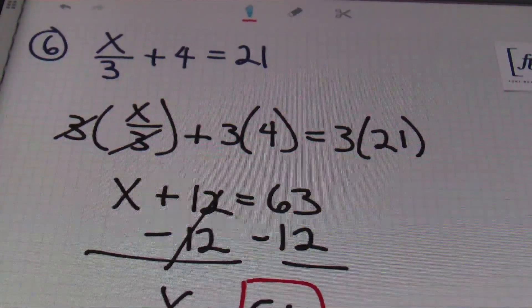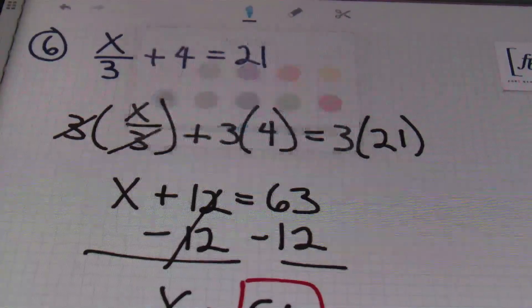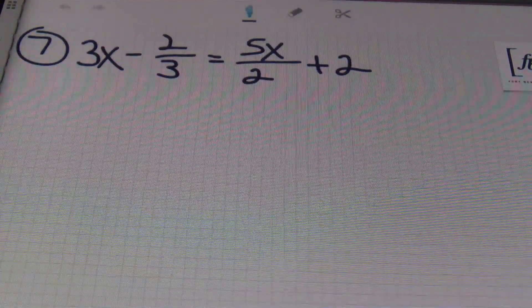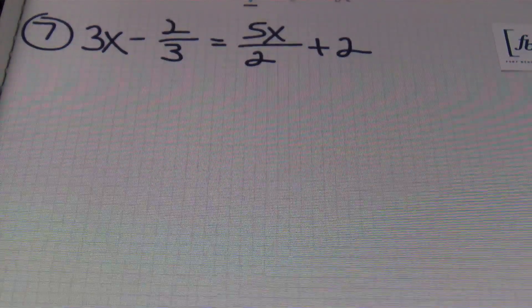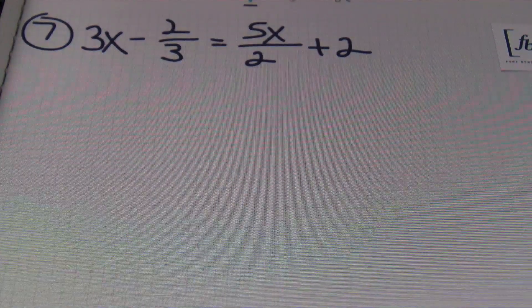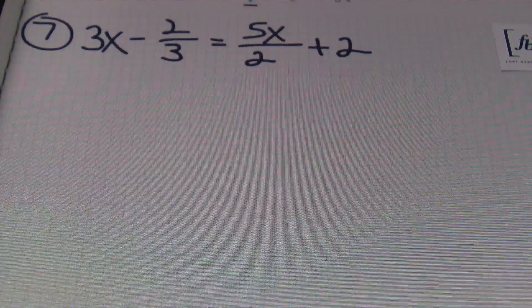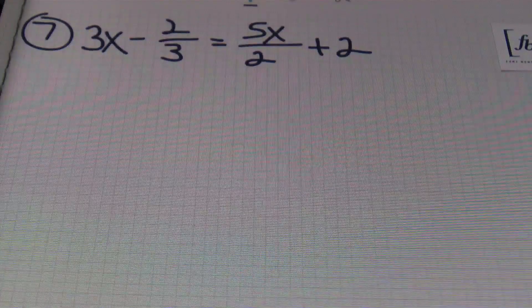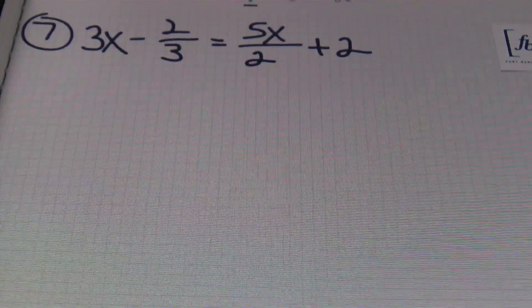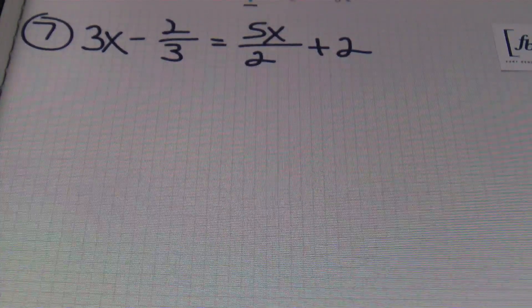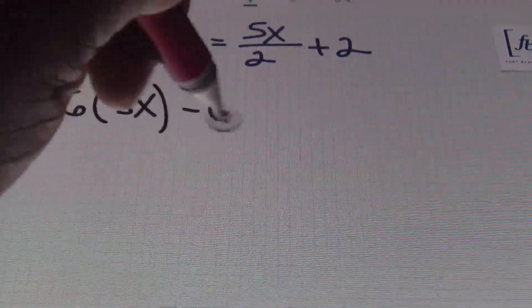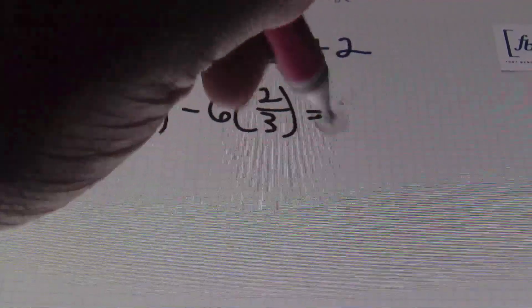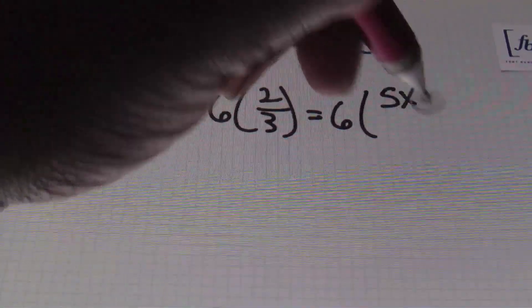That was problem number six. Next, and finally, problem number seven. In problem number seven, we have three x minus two-thirds equals five x over two plus two. I don't want to deal with a fraction, so I'll be multiplying everything by the lowest common denominator. The least common denominator is six in this case. So each of these four terms are going to be multiplied by six.